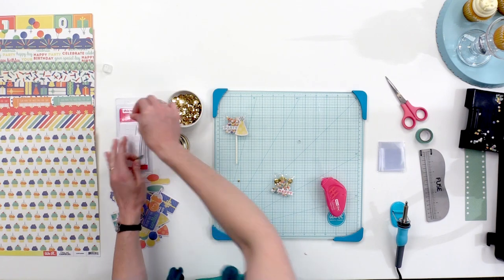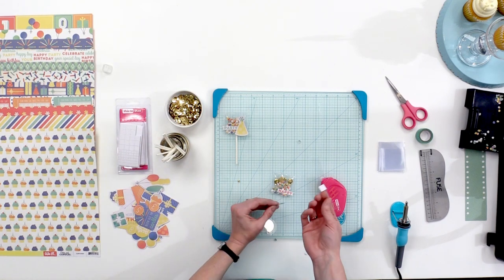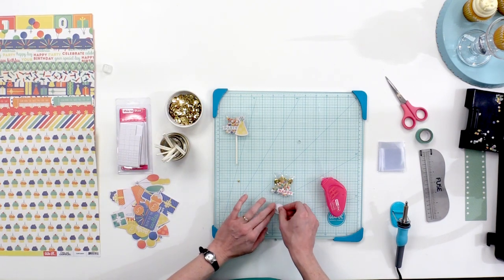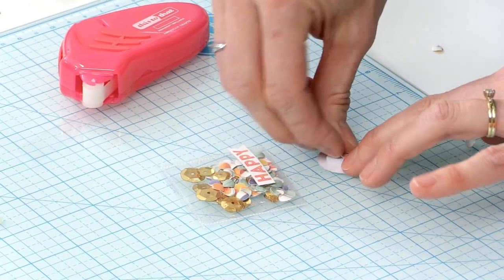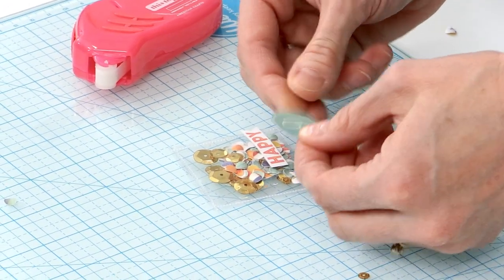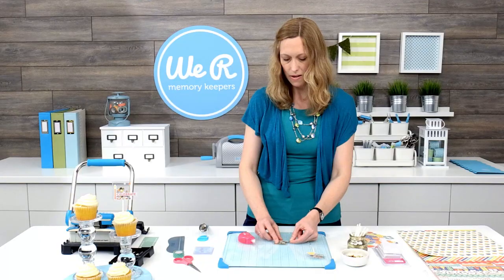And I'm going to stick this on with a foam square. I love to use foam squares on my projects because it just adds that little extra pop and a little bit of dimension. So we'll stick that on there.